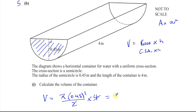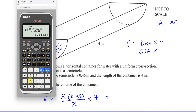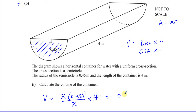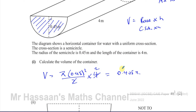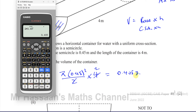So that gives us 2 times pi times 0.45 squared, which is 0.405 pi. I'll keep this in exact form in case we need it later, then multiply by pi to get the numerical answer.